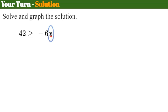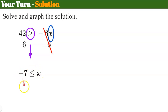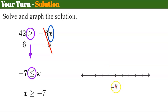Let's see how you did. x is being multiplied by -6, so the inverse is to divide both sides by -6. Because we're dividing by a negative value, we must reverse the symbol. Dividing gives x, and we reverse the symbol to ≤, yielding x ≤ -7. Flipping so x is on the left requires reversing the symbol again. On the number line, place -7 with a closed circle and shade to the right.